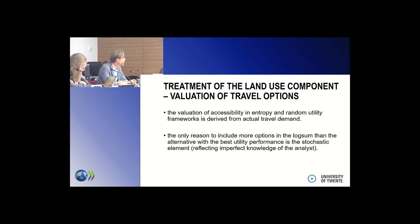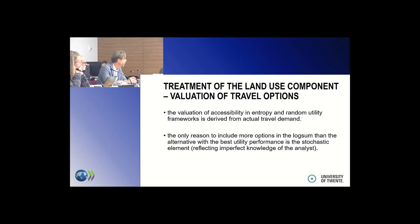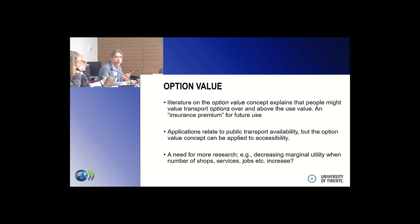All the transport demand models used for valuation of accessibility — spatial interaction, entropy, or random utility frameworks — focus on actual or modelled demand, so all the accessibility benefits derived are linked to actual demand. For the logsum, the stochastic element exists mainly because of the imperfect knowledge of the researcher, not the imperfect knowledge of the user. So what we're missing is the valuation of transport options that we have, even though we might not actually use them.